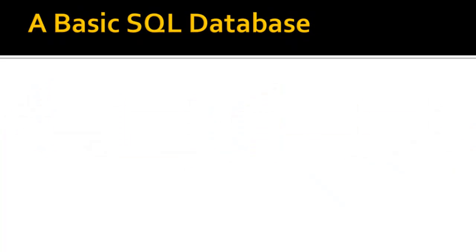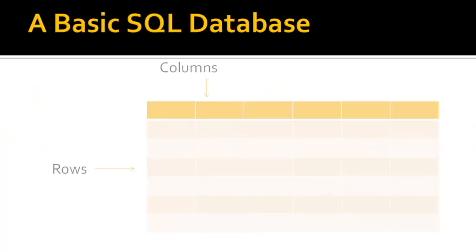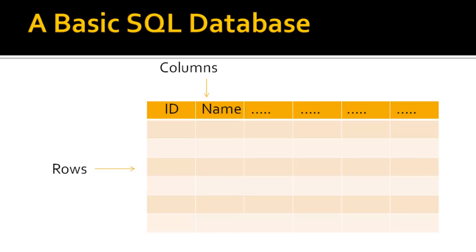In an SQL database, the data is stored in tables which have columns and rows. Columns of the table contain the description of the entities, such as ID, name, etc., and the rows of the table contain the data for those entities. An SQL database can contain more than one table at the same time, with each table identified with a name.